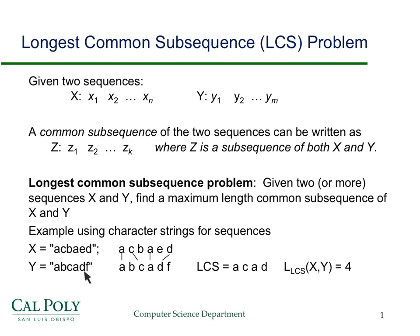Let character strings stand in for the sequences. One sequence X will be A, C, B, A, E, D and the other sequence Y will be A, B, C, A, D, F. What we want is the longest common subsequence. For this particular problem, because the sequences are short, we can just look at it and see that the longest common sequence is going to be A, C, A, D. The A's match, the C's match, the A's match, and the D's match.